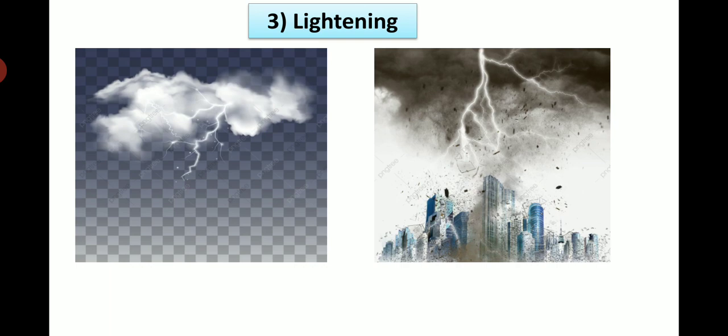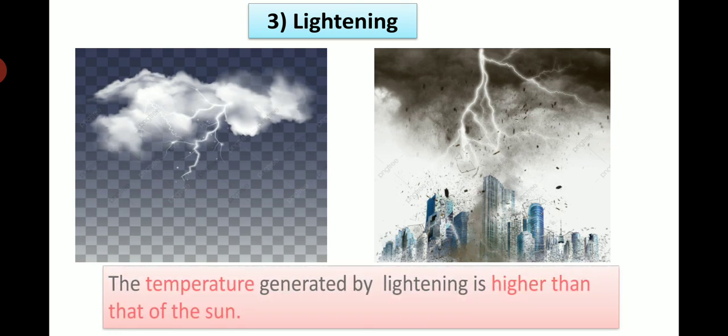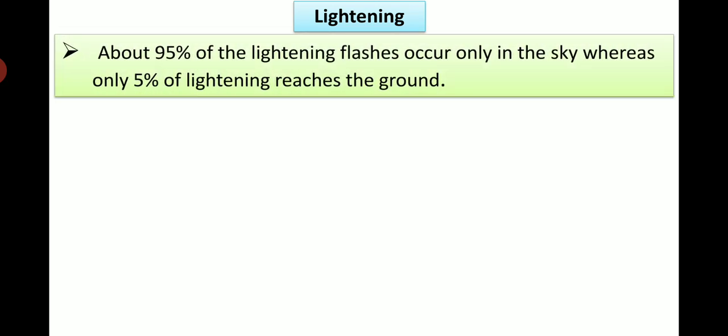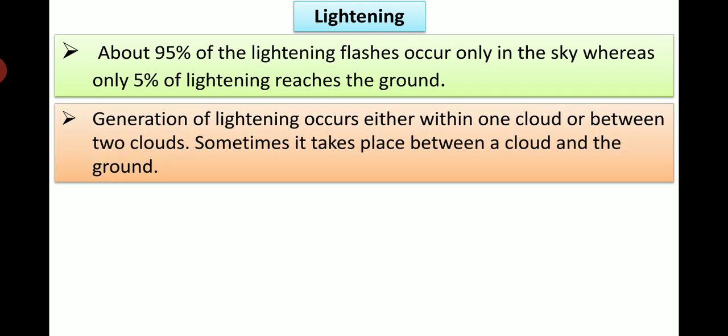Now next disaster is lightning. We can see lightning in these pictures. The temperature generated by lightning is higher than that of the sun. About 95% of the lightning flashes occur only in the sky, whereas only 5% of lightning reaches the ground. Generation of lightning occurs either within one cloud or between two clouds. Sometimes it takes place between a cloud and the ground.